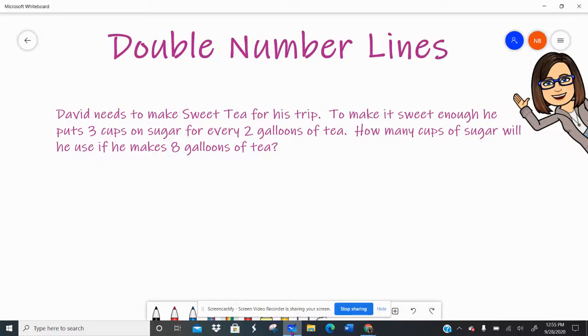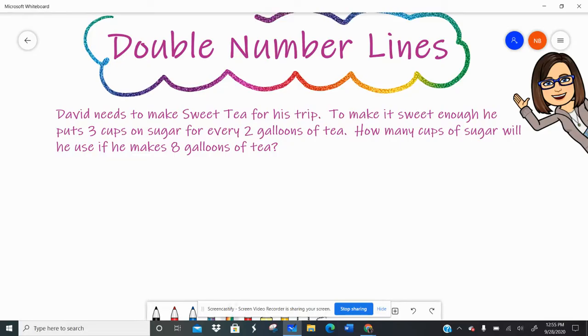Hey all you wonderful people out there. Today we're going to talk about double number lines and how we can use them to determine if ratios are proportional or equivalent. All of those words are kind of interchangeable, proportional and equivalent. So let's look at the word problem in front of us and see if we could use a double number line to solve.